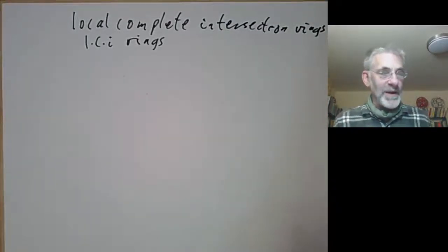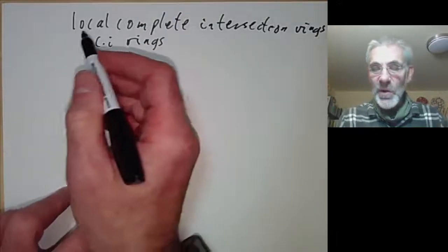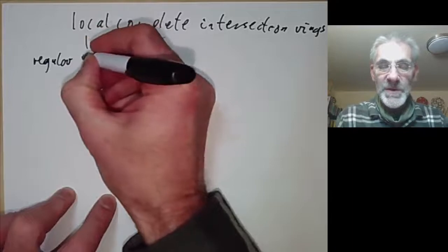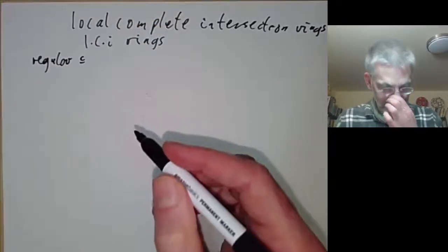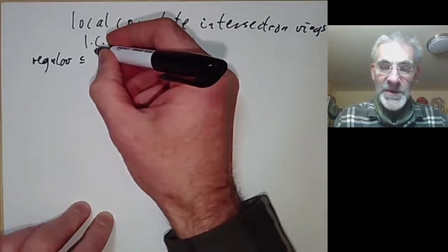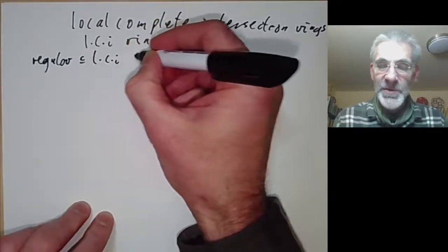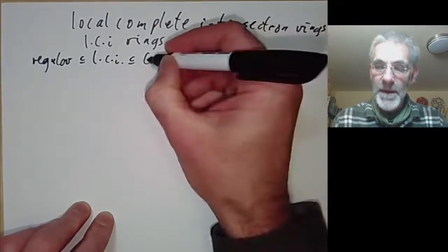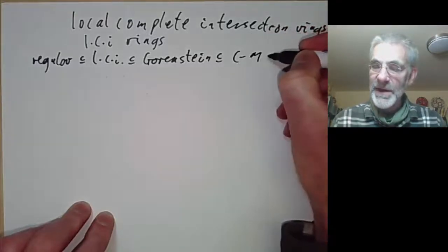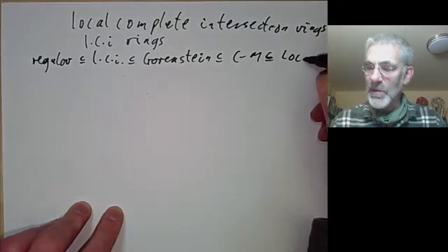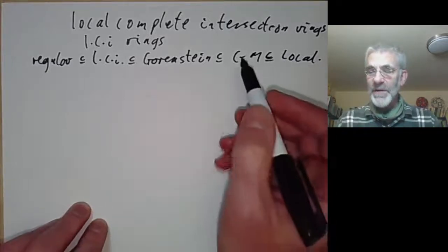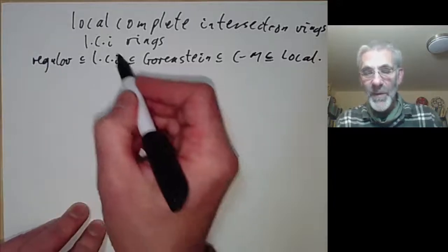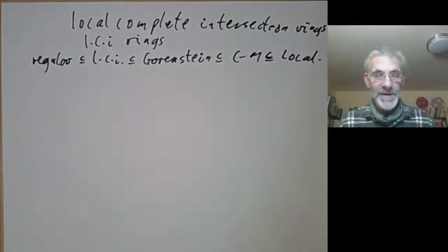We've been talking about several classes of local rings, so I'll briefly recall where these fit in. We had regular local rings, which correspond to non-singular points of varieties. These are a special sort of local complete intersection ring, which are in turn a special case of Gorenstein rings, which are in turn a special case of Cohen-Macaulay rings, which are a special case of local rings.